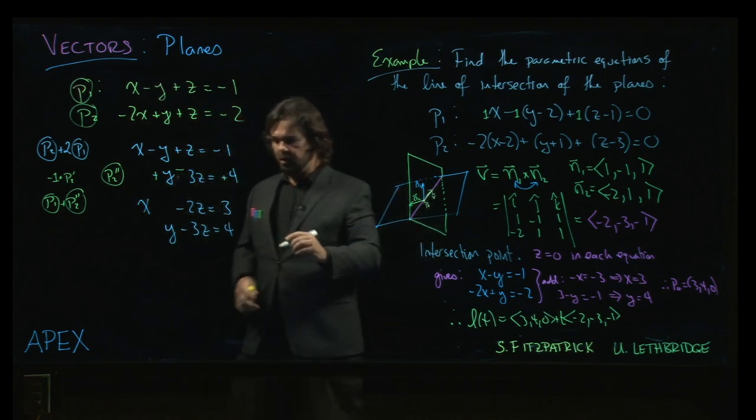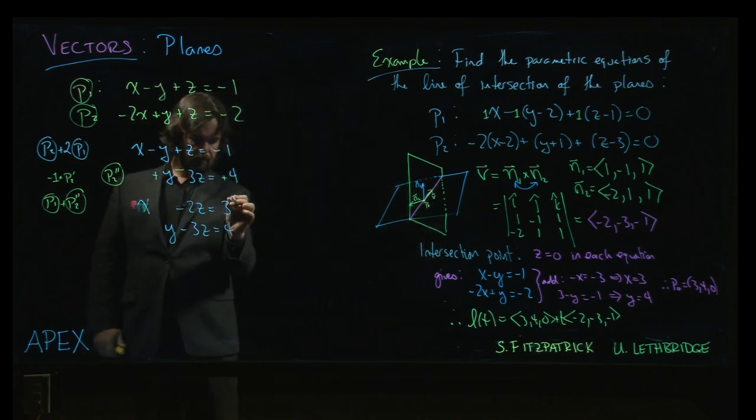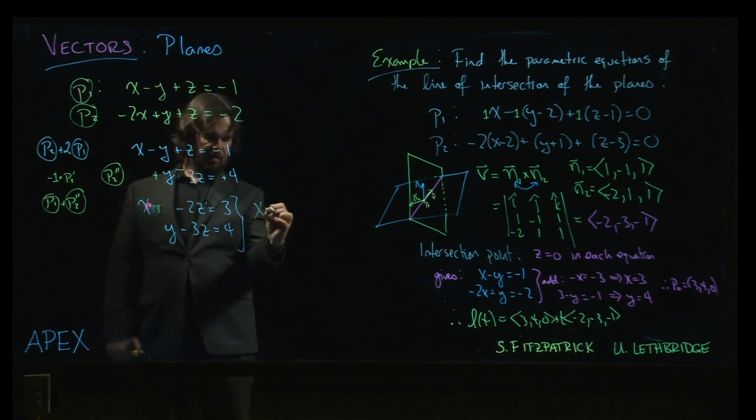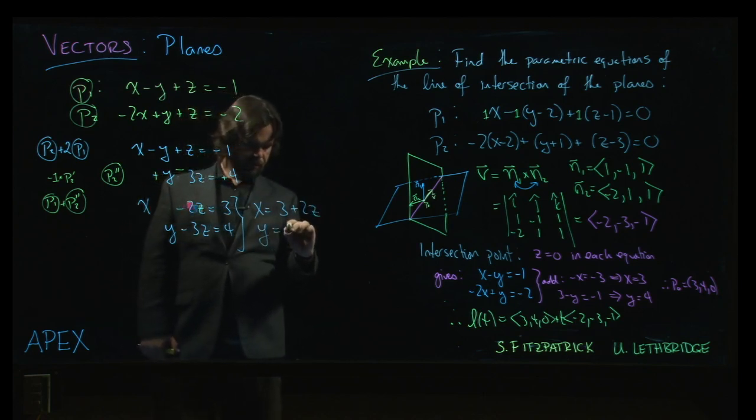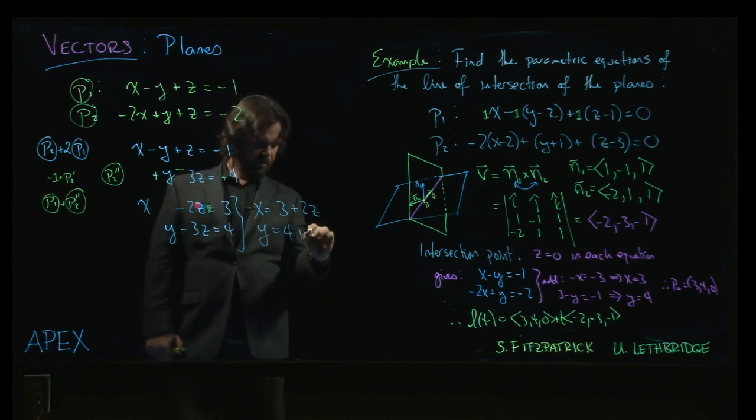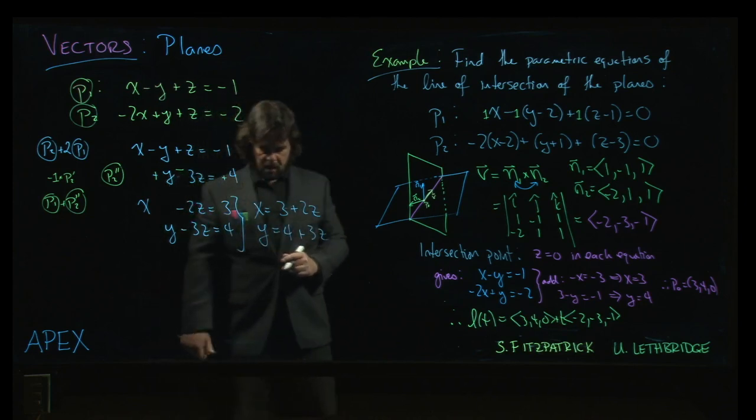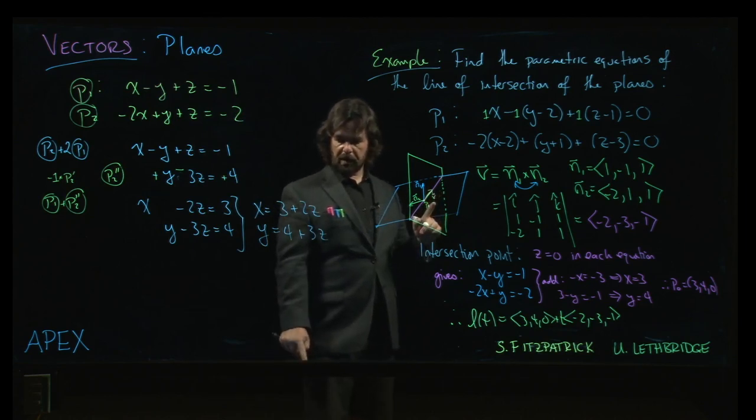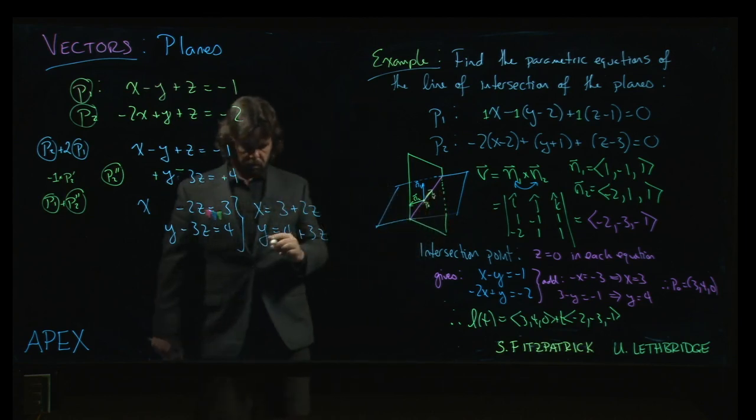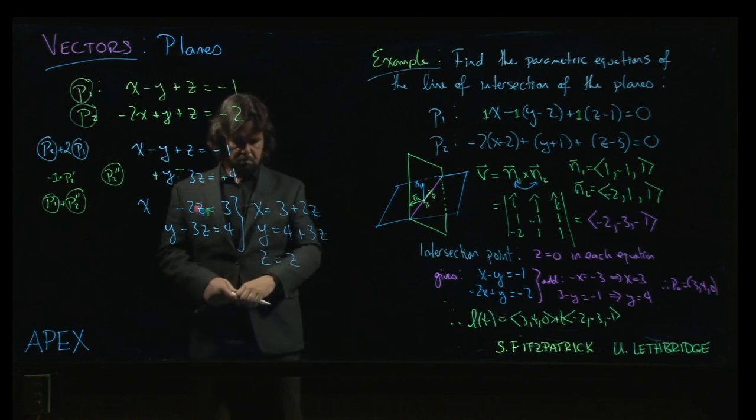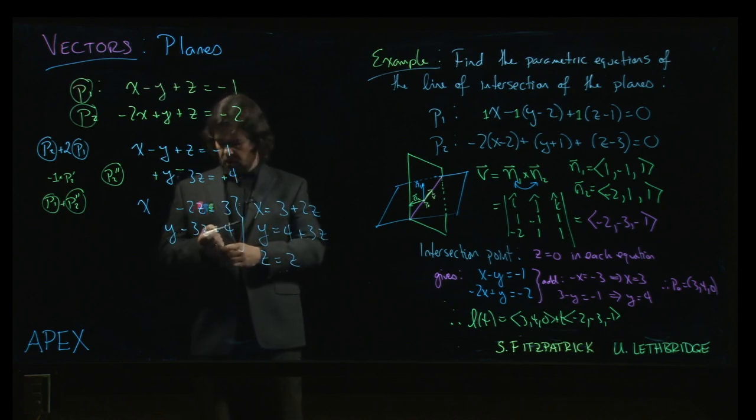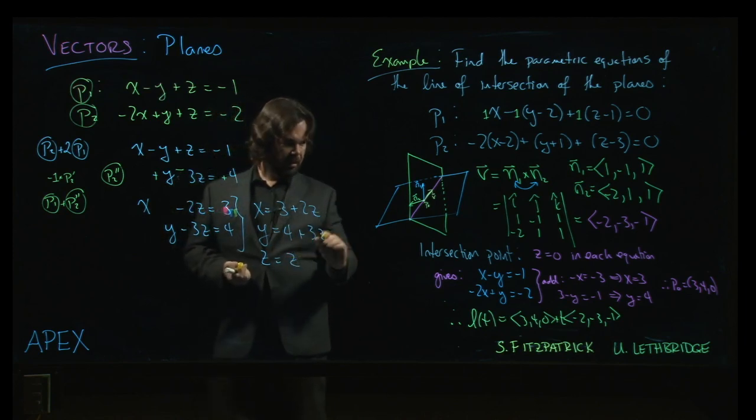Now we're in business, because what I can do is actually rewrite like this: x equals 3 plus 2z, y is equal to 4 plus 3z. Now that looks an awful lot like parametric equations for a line, except there's no z. I guess we could say z equals z. We're not saying much about the z. Well, let's do one more thing.